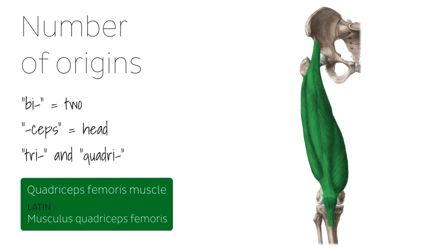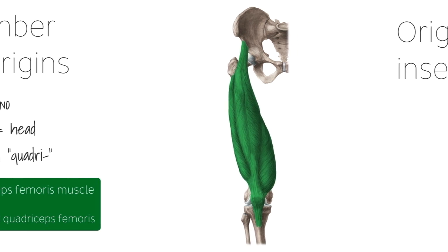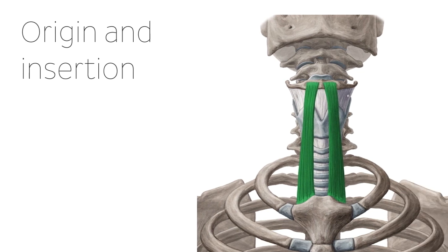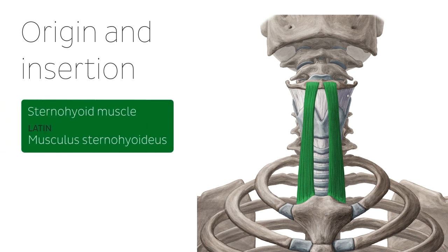Muscles can also be named according to their point of origin and insertion. One such example is the sternohyoid muscle, which is a muscle of the neck region that has its origin on the dorsal surface of the manubrium of the sternum and the sternoclavicular joint, and inserts on the body of the hyoid bone.